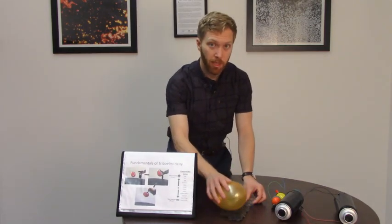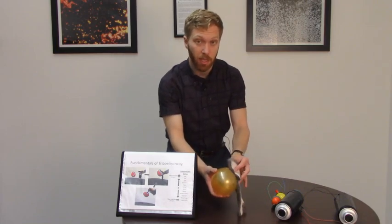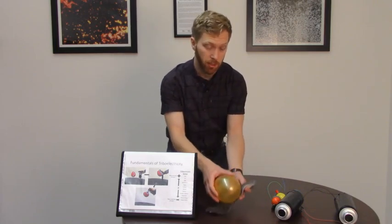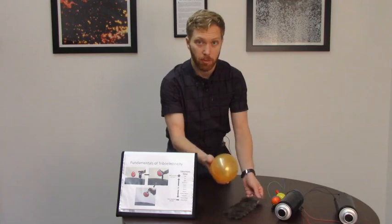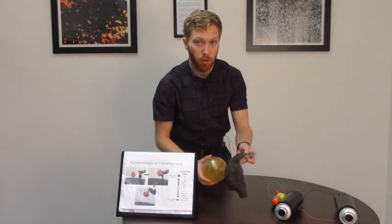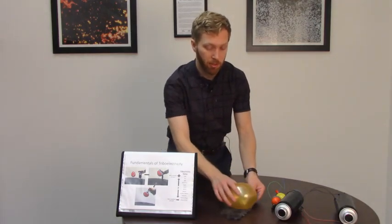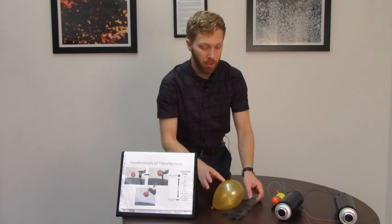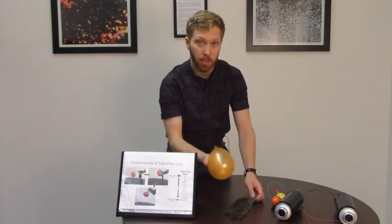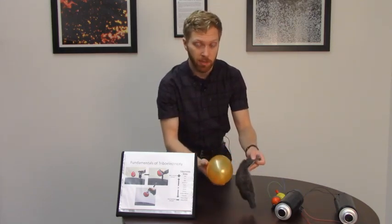When we start rubbing them together, some materials like charges more than other materials. In this case, the balloon likes the negative charges more than the fur. So it's going to grab onto those and hang onto them. That will lead to the balloon being negatively charged and the fur being positively charged.